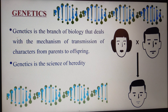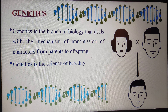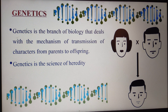First of all, what is genetics? Genetics is the branch of biology that deals with the mechanism of transmission of characters from parents to offspring. Biology itself means the study about living organisms, and there are different branches of biology — biochemistry, biotechnology, and so on. Genetics deals with genes, the transmission of characters from parents to offspring, and variation.